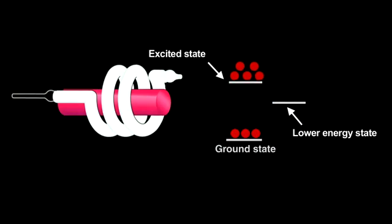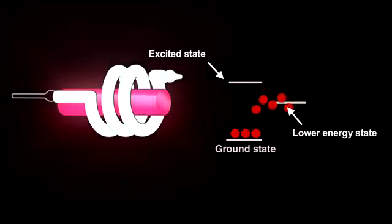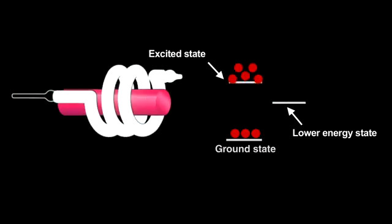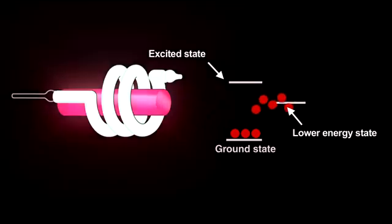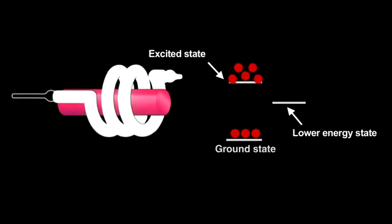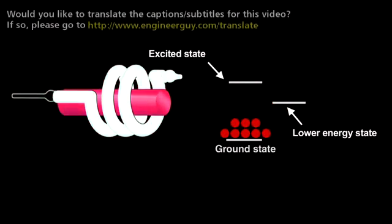Electrons from a population inversion returning to the ground state release light that starts an avalanche called stimulated emission. The photon produced when an electron decays induces other excited electrons to simultaneously decay and release nearly identical photons. That creates coherent light, meaning that the crests and troughs of every light wave in the beam match up.